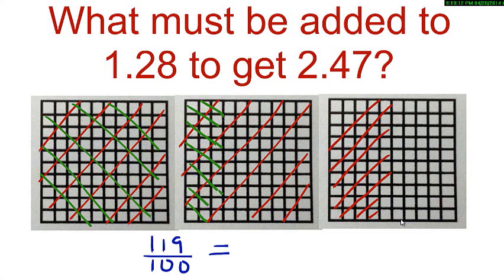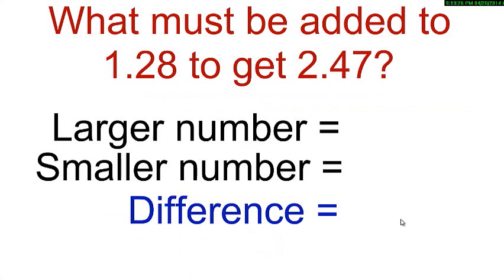So, the decimal is 119 by 100, 1.19. So, if we add 1.19 to 1.28, we will get 2.47. This can also be shown as the larger number is 2.47. The smaller number is 1.28. You can find the difference.